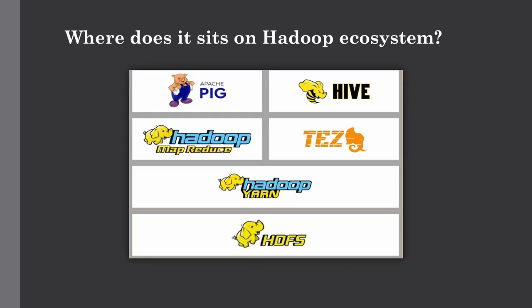Let's talk about where Tez sits in our Hadoop cluster. As you can see in this figure, Tez sits on top of Hadoop YARN, which we discussed in the previous lecture. YARN deals with resource management - it allocates resources for tasks on your Hadoop cluster and submits them to your data nodes. Tez then builds a complex DAG to process your data, using a different approach than MapReduce.